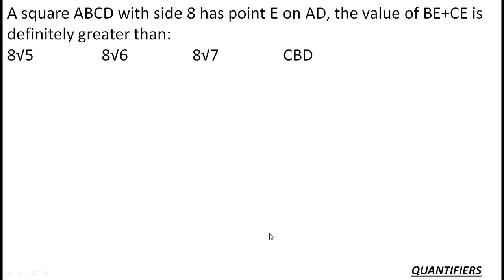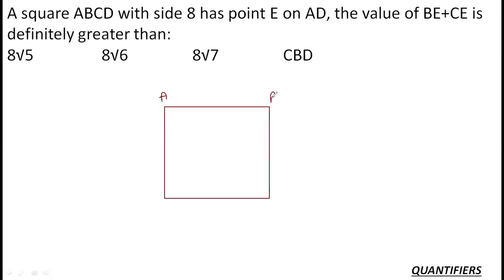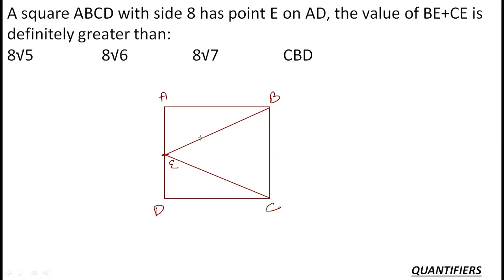The problem says: a square ABCD with side 8 has point E on AD — so E is somewhere on that side. The value of BE + CE is definitely greater than some options. BE + CE — it is a symmetric figure; a square is a symmetric figure. So if I have to make this distance BE + CE minimum, what should I do?